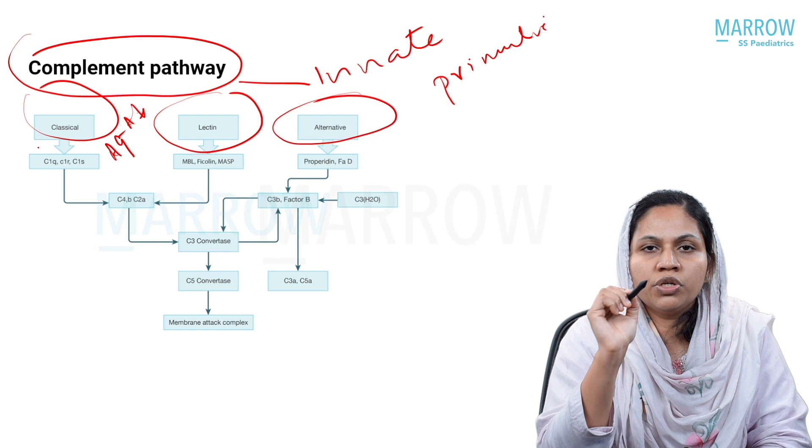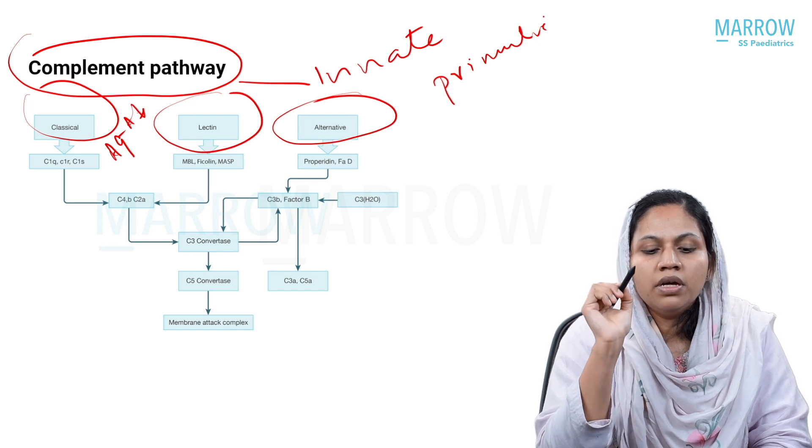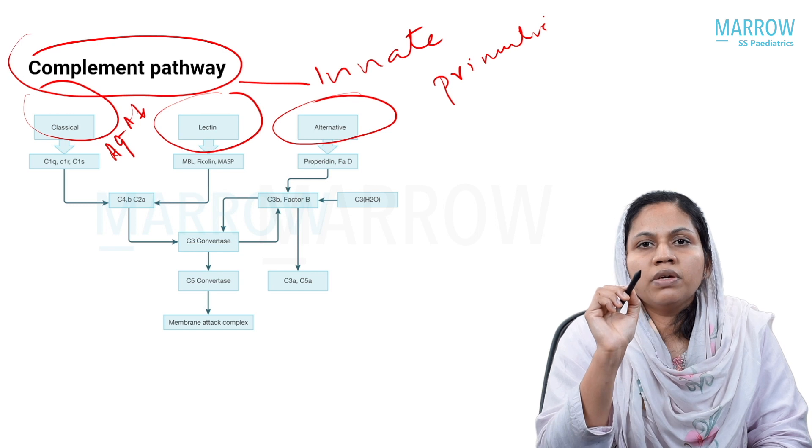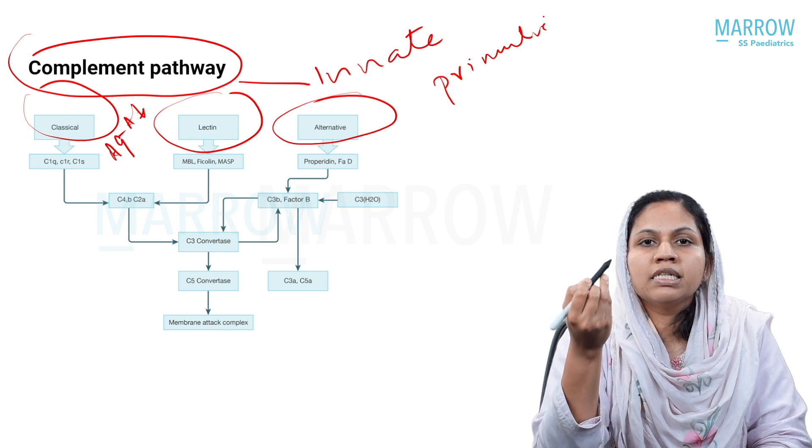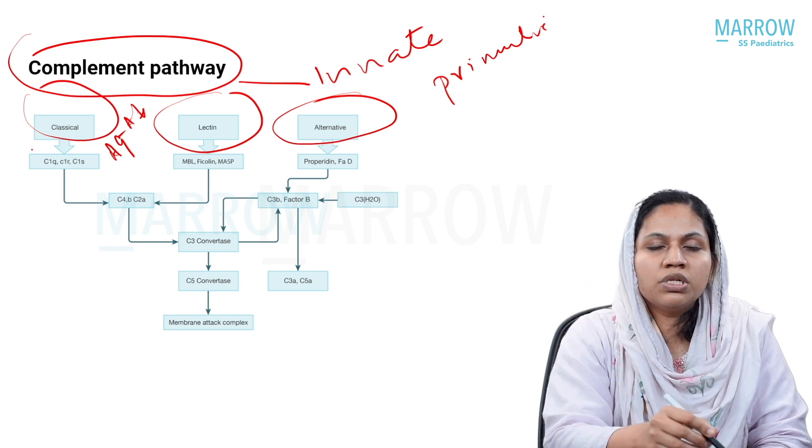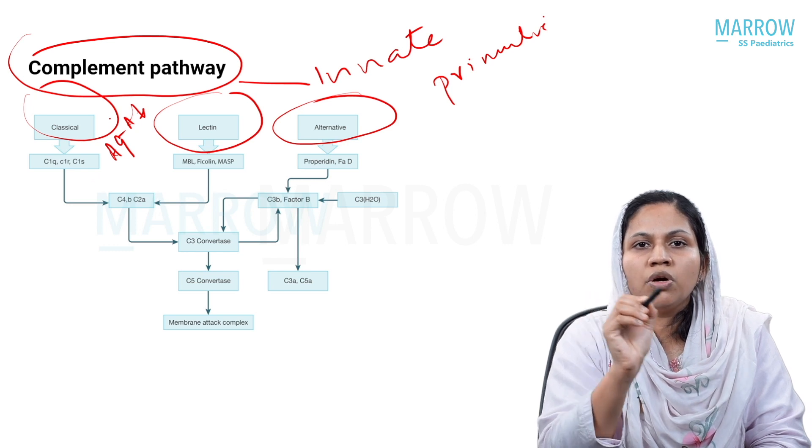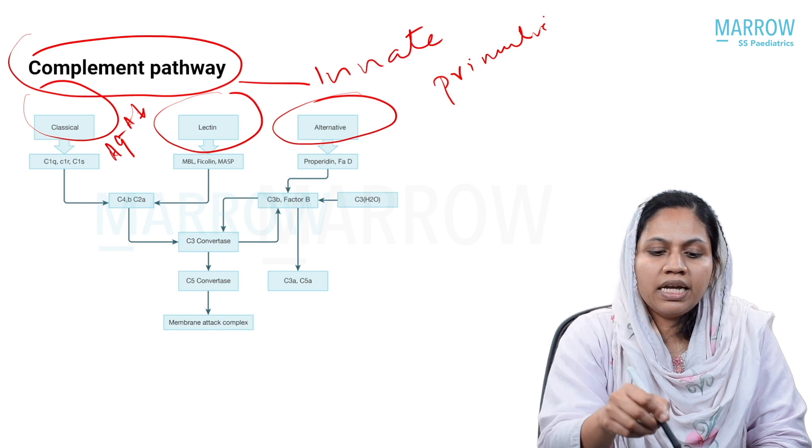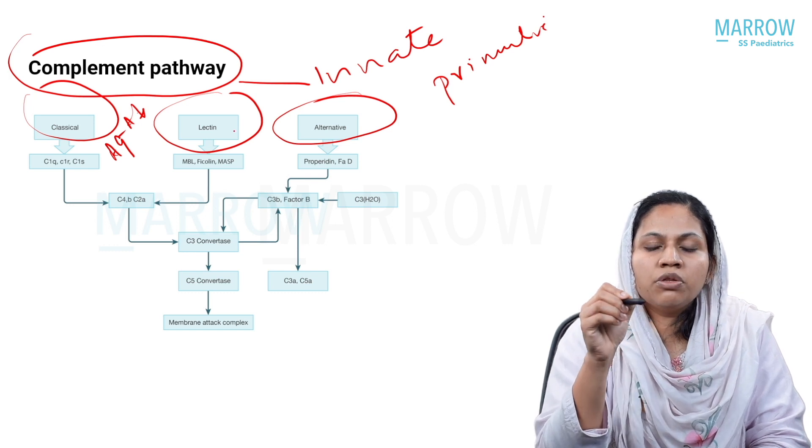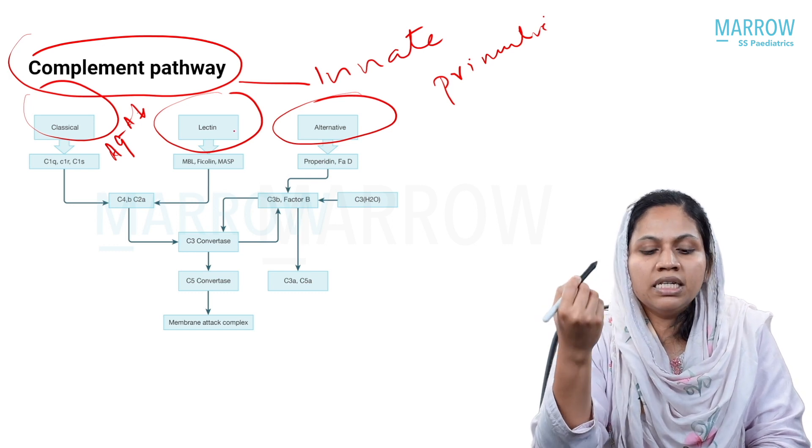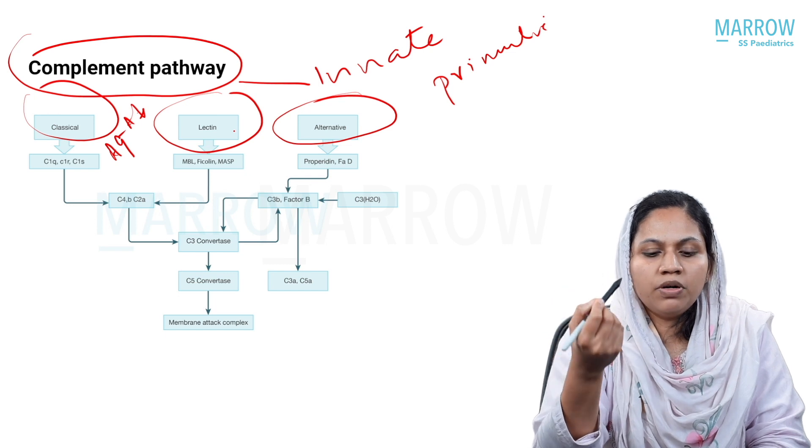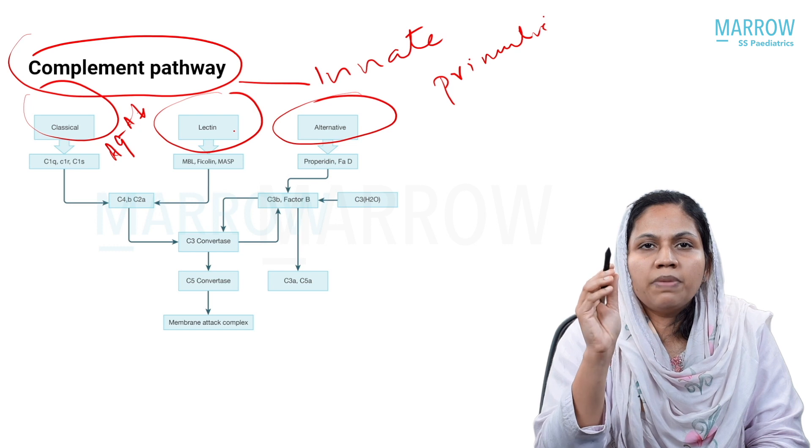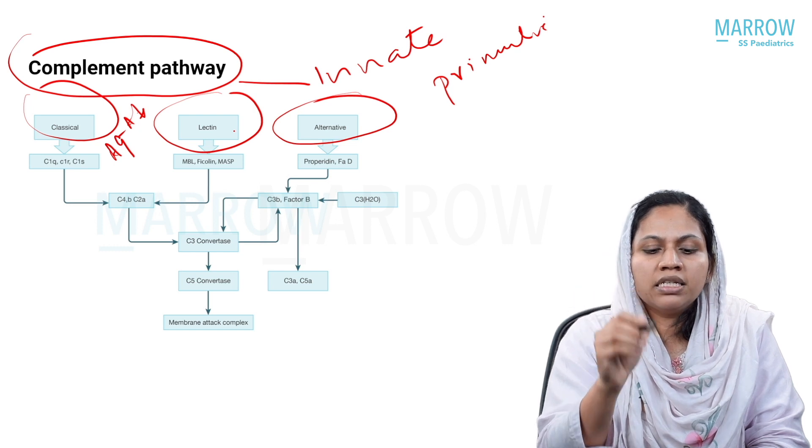The classical pathway is usually triggered by antigen-antibody complexes and the starting molecule is C1Q, C1R - the complement factor 1 is the starting molecule. To take an example pertaining to classical pathway, we know that systemic lupus erythematosus is usually by activation of antigen-antibody complexes by classical pathway. The next being a lectin pathway.